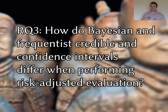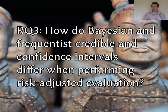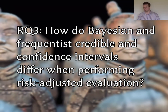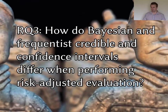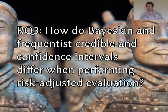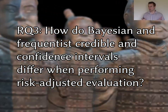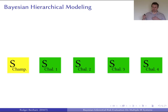How do Bayesian and frequentist credible and confidence intervals differ when performing risk-adjusted evaluation? A credible interval is a Bayesian interval, and a confidence interval comes from a frequentist test. In the approach we use in our paper, let's talk about Bayesian hierarchical modelling.